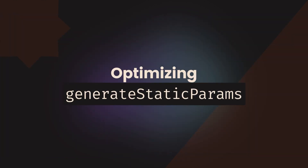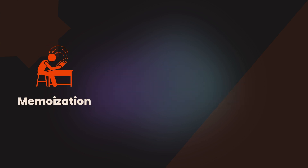While generateStaticParams is a great tool for pre-building pages, we must use it efficiently to avoid long build times and excessive API requests. Here are some best practices for optimizing static generation. First, memoization of fetch requests ensures that identical fetch requests are executed only once, reducing redundant API calls and speeding up builds.